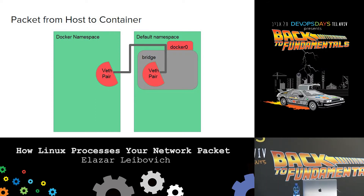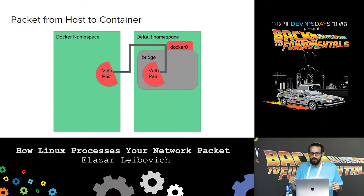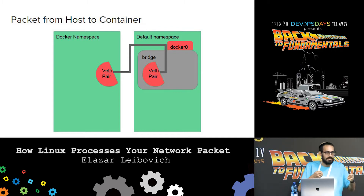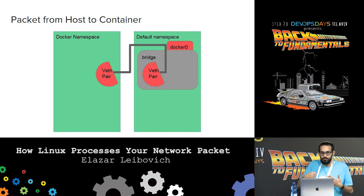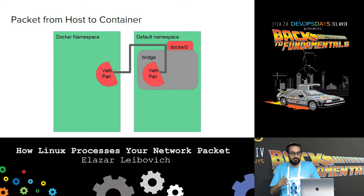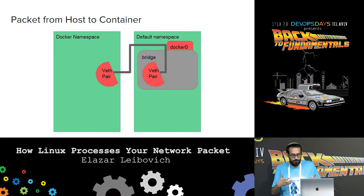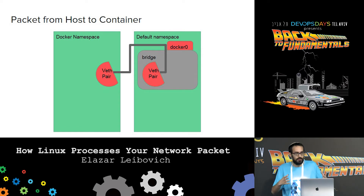The other component is bridge. A bridge is like a physical switch. The bridge allows us to enslave — to connect — many network devices, to put them inside the bridge. The bridge knows when a packet reaches it; it selects the destination from one of the enslaved devices and moves the packet to that port or network device. This is the way Docker connects many containers to one another.